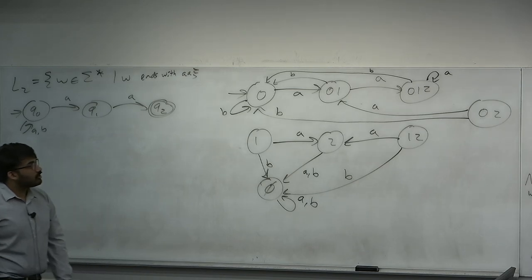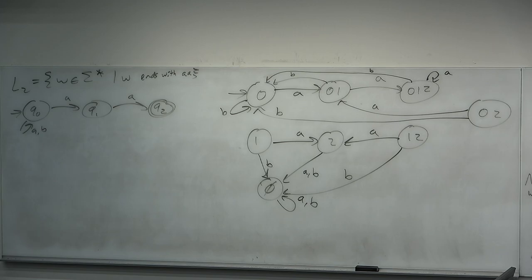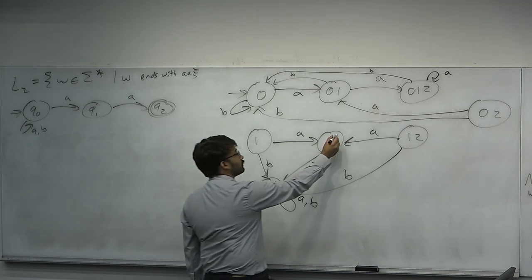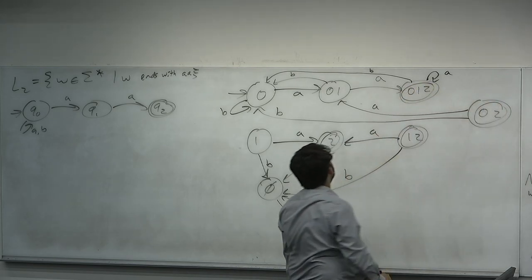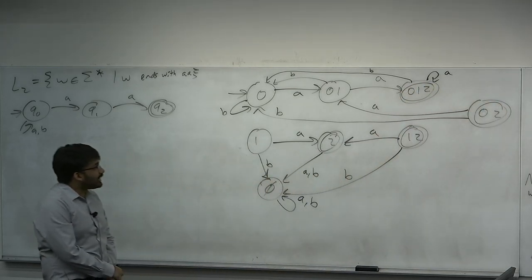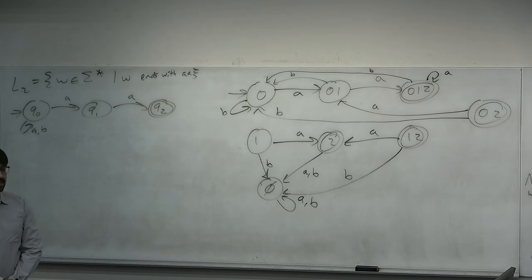That is a DFA to correctly simulate the NFA. Well, we need one more part. The final states. What states are final? 2, 1-2, 0-2 and 0-1-2. Any state containing a final state. Awesome. That is a correct DFA that simulates your NFA. It correctly switches between the subsets to go to the states that we want to.